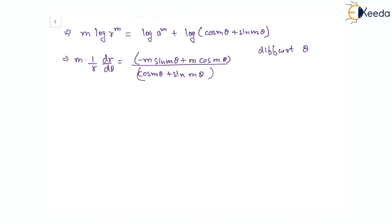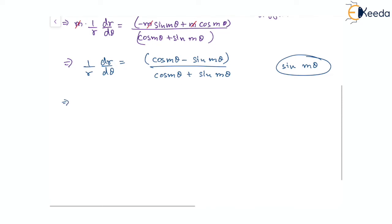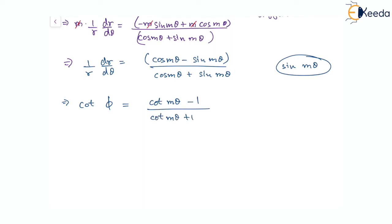Taking m common from both sides, we will have (1/r)(dr/dθ) equal to (cos(mθ) minus sin(mθ)) divided by (cos(mθ) plus sin(mθ)). Dividing numerator and denominator by sin(mθ), we get cot φ equal to (cot(mθ) minus 1) over (cot(mθ) plus 1), since tan φ = r(dθ/dr), so cot φ is just the reverse of it.